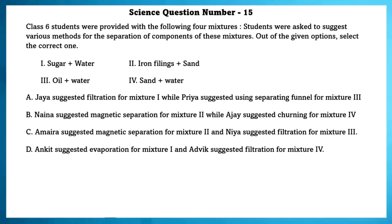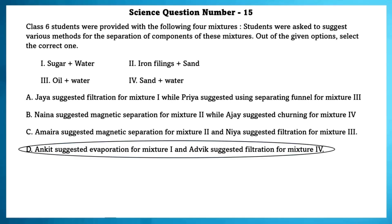Science question number 15. Class students were provided with various mixtures and asked to suggest methods for separation of the components. The correct answer is that Ankit suggested evaporation for mixture 1 and Advik suggested filtration for mixture 4.